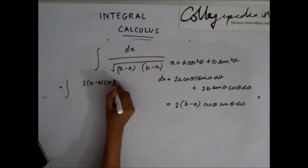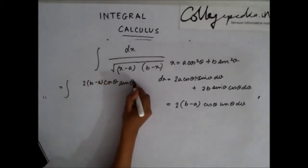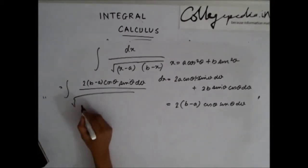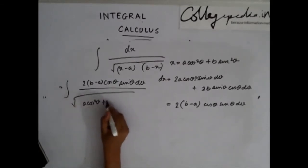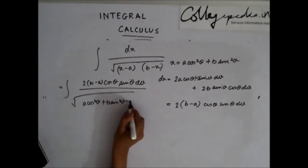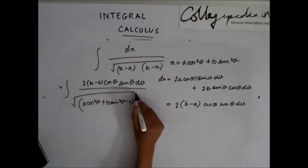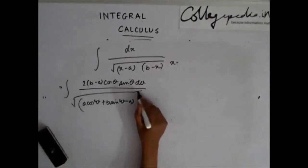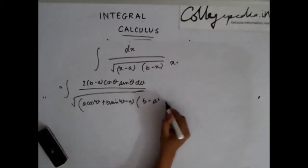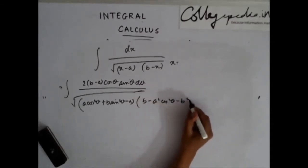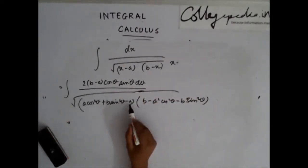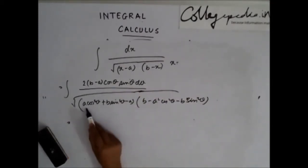Substituting into the integral, the numerator becomes 2(b − a) cosθ sinθ dθ. The denominator under the root has (a cos²θ + b sin²θ − a) for the first factor, and (b − a cos²θ − b sin²θ) for the second factor.